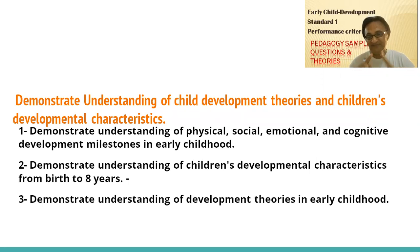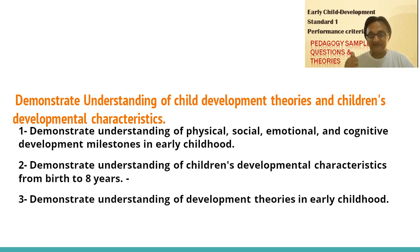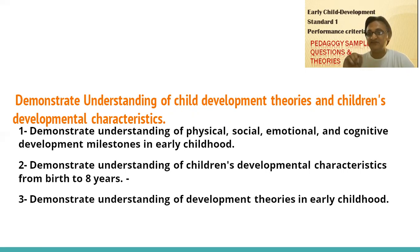Standard One is about child development, and this is Performance Criteria One of Standard One: 'Demonstrate understanding of child development theories and children's development characteristics.' In this performance criteria, there are two aspects we're going to discuss — one is development theories and the other is characteristics. This standard is covering three domains or performance indicators: demonstrated understanding of physical, social, emotional, and cognitive development milestones.